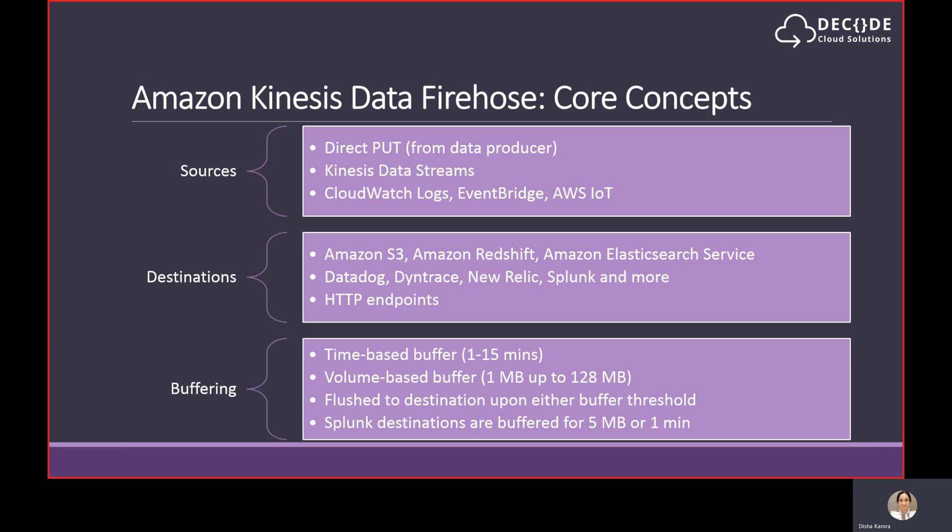The frequency of data delivery to S3 is determined by the buffer size and buffer interval values you configure for your delivery stream. The service buffers incoming data before delivering it to S3. You can configure the buffer size between 1 to 128 MB or the buffer interval between 60 to 900 seconds — whichever condition is met first will trigger data delivery to S3. When data delivery falls behind data writing to the stream, the service raises the buffer size dynamically to catch up and ensure data is delivered to the destination. Firehose also buffers incoming data before delivering it to Splunk, with a buffer size of 5 MB and a buffer interval of 60 seconds — these are not configurable as they are optimized specifically for the Splunk integration.